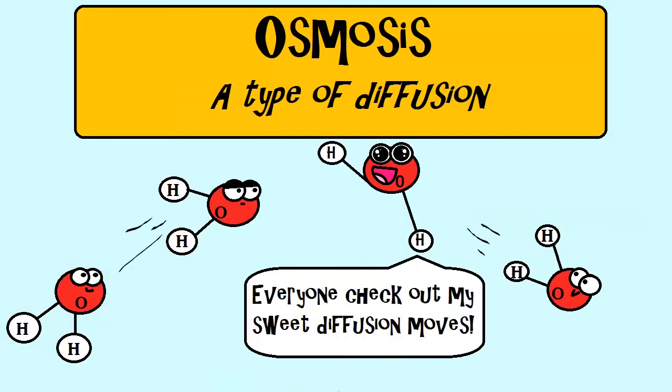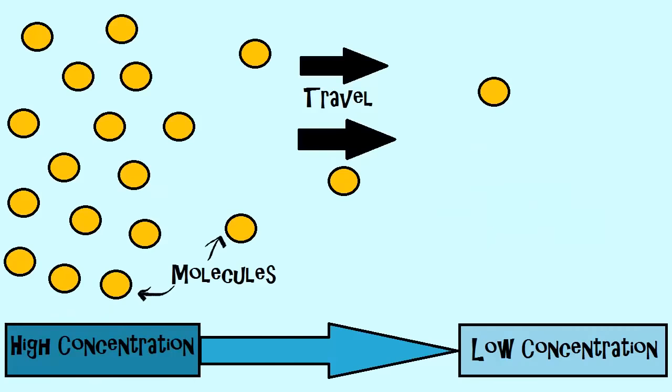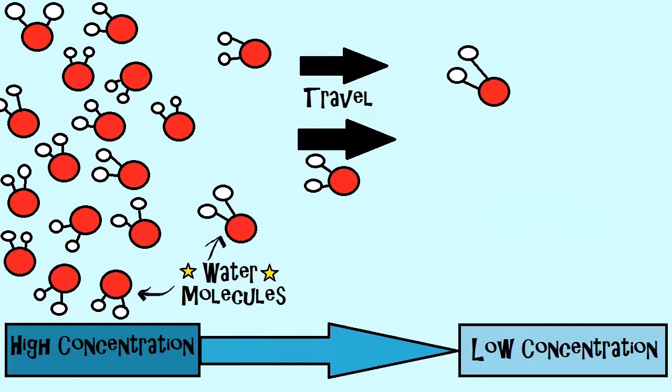I mentioned osmosis is a type of diffusion. And similar to what you might have learned about with diffusion, molecules, in this case water, travel from areas of high concentration of water to low concentration of water.